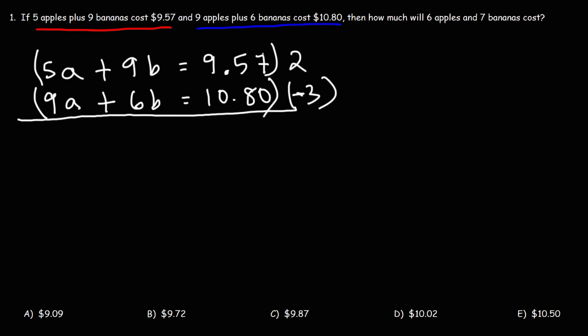So let's multiply the first equation by 2. So we have 5A times 2, which is 10A, 9B times 2, which is 18B, and then 9.57 times 2, which is 19.14.